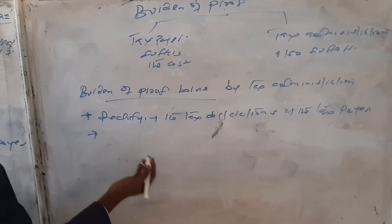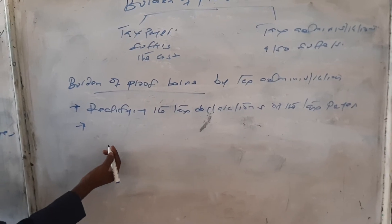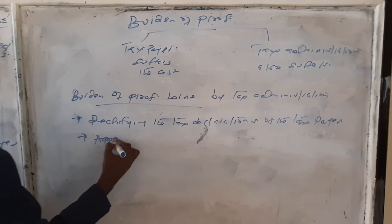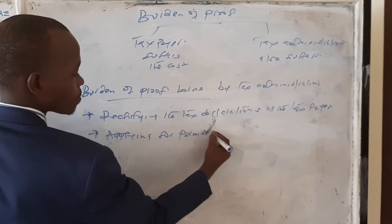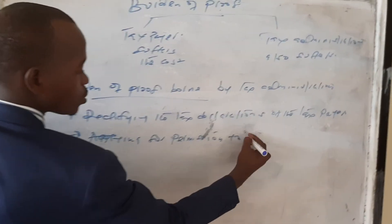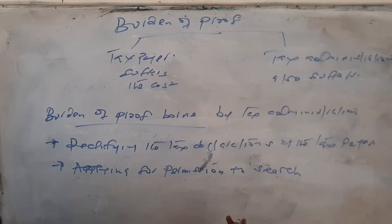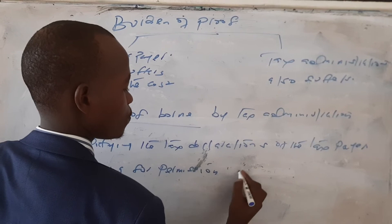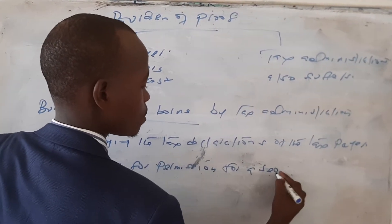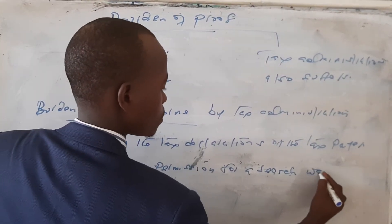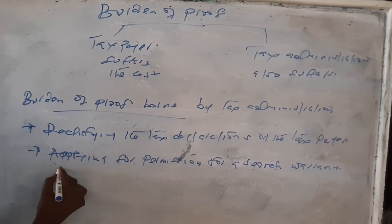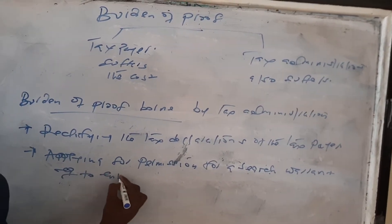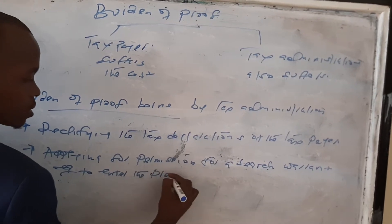Another burden of proof borne by the tax administration is applying for permission to search — specifically, applying for a search warrant.